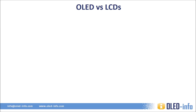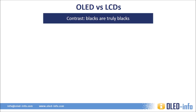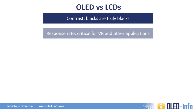OLED TVs have several advantages over LCD TVs. First of all, OLEDs feature a much higher contrast ratio. In LCDs, it is impossible to achieve a perfect black because of the backlighting unit that is always on. But in OLEDs, an off pixel is actually off. One of the major problems with LCDs is the slow refresh rate. OLEDs are about a thousand times faster than LCDs, and this is proving critical in some applications, such as virtual reality headsets.